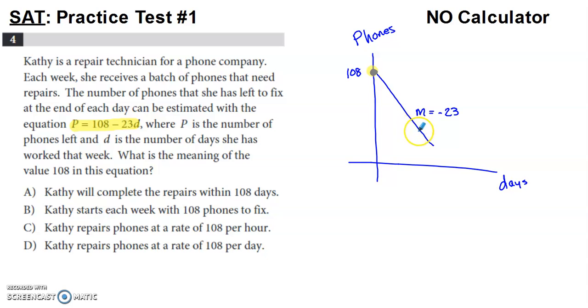After a few more days, the number of phones has gone down some more. So it seems like option B is pretty tempting. If you look at option C and D, she repairs phones at a rate of 108 per hour, she repairs phones at a rate of 108 per day. It might be tempting to choose those, but if you've done any applications with slope intercept form, as I'm sure you have, you've hopefully said that slope is really a rate.